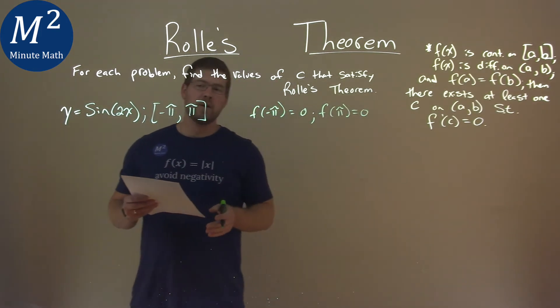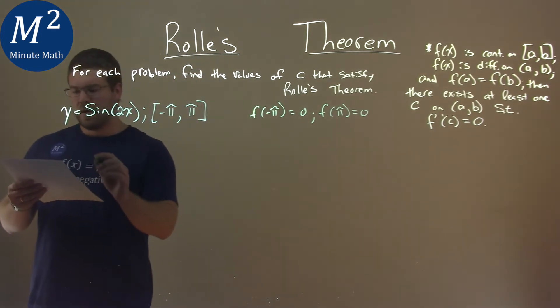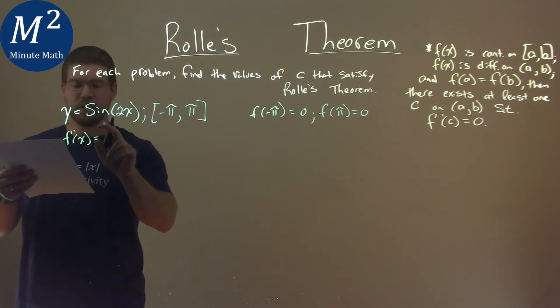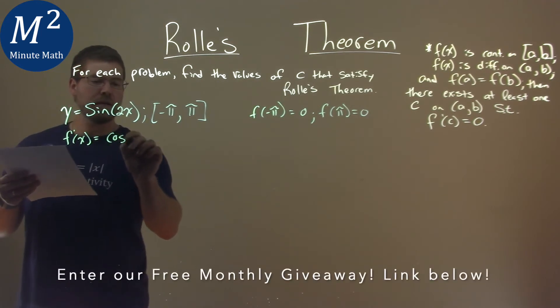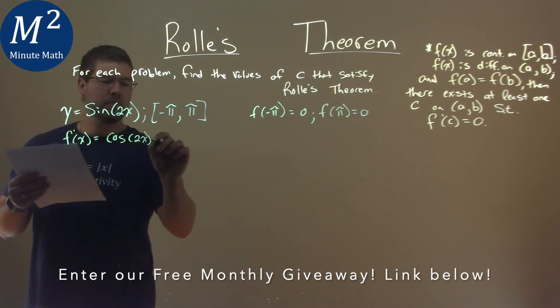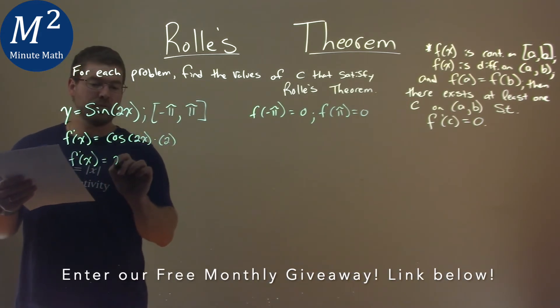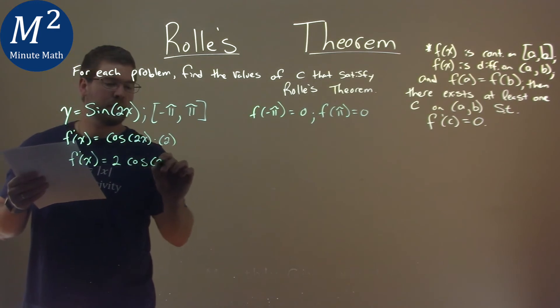From there, we want to find the derivative to apply Rolle's Theorem. So our derivative here, f prime of x, is equal to, derivative of sine is cosine, cosine of 2x times the derivative of inside, which is 2. We can rewrite that to be f prime of x is equal to 2 cosine of 2x.